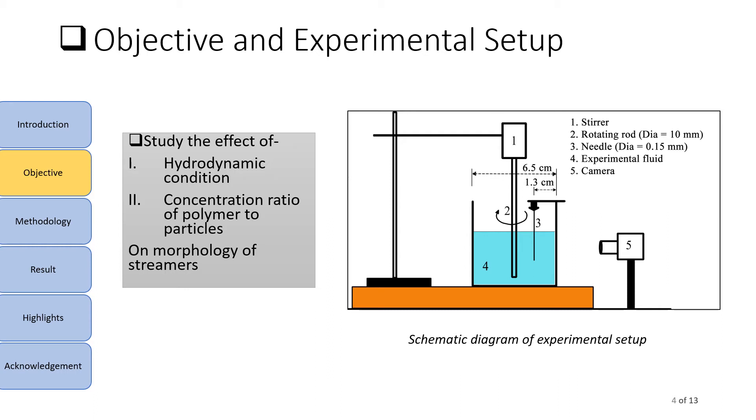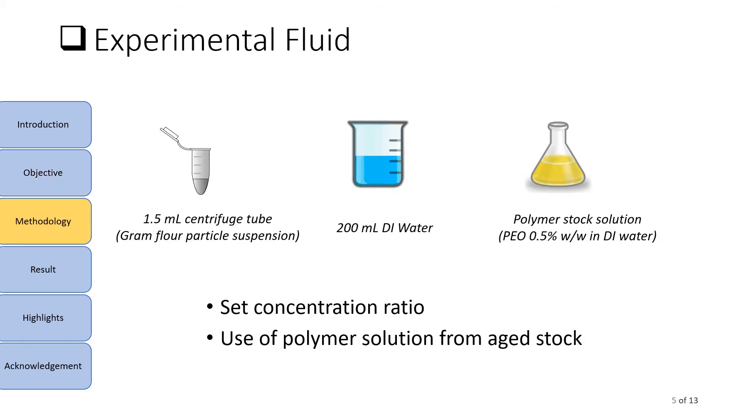Particle-laden polymeric fluid is kept in this annular region. Preparation of this experimental fluid is not very straightforward. To prepare our experimental fluid, particle suspension and polymer solution were prepared separately. We have used gram flour as the particles and polyethylene oxide (PEO) as the polymer. Finally, a known volume of these two solutions were mixed with 200 ml of DI water to get the experimental fluid of desired concentration ratio.